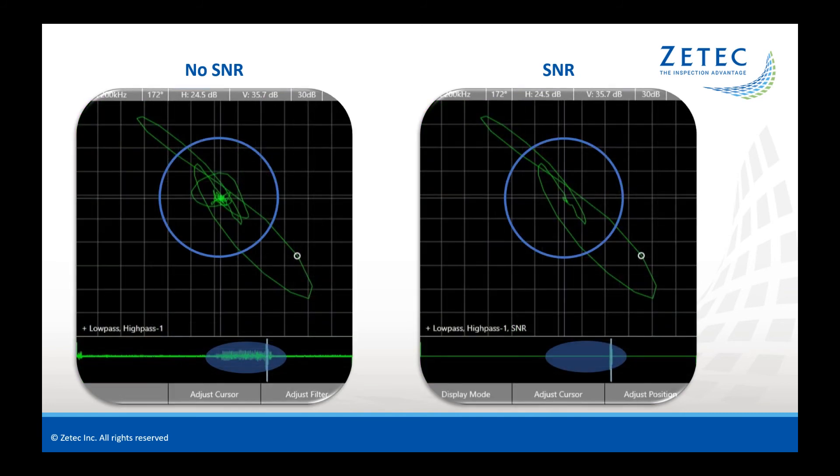This is the same data, but now looking at a strip chart view. You can see significant noise on the strip chart on the left and zero noise, once again, without flaw signal attenuation on the right.